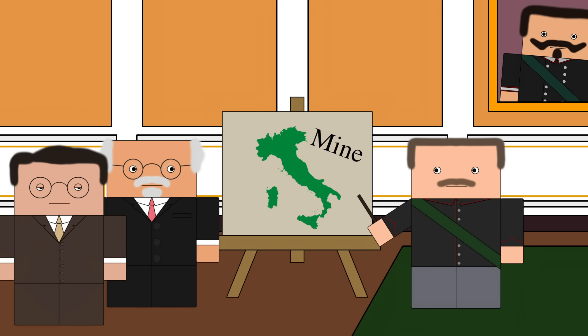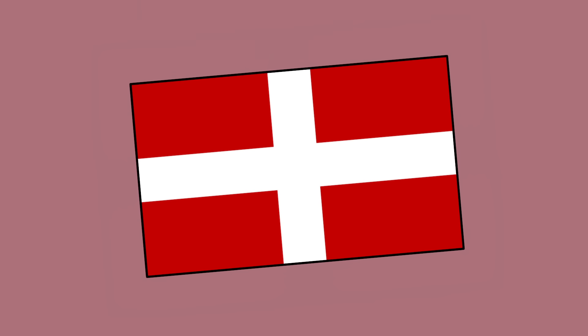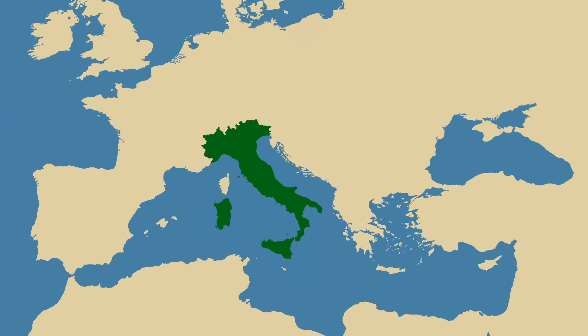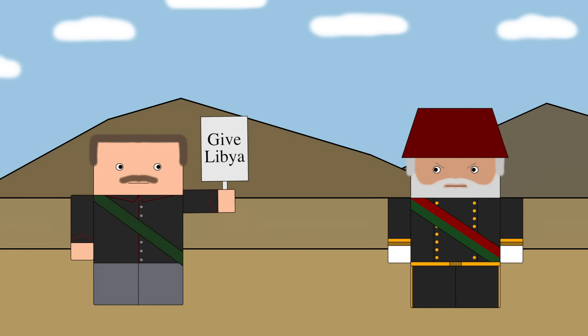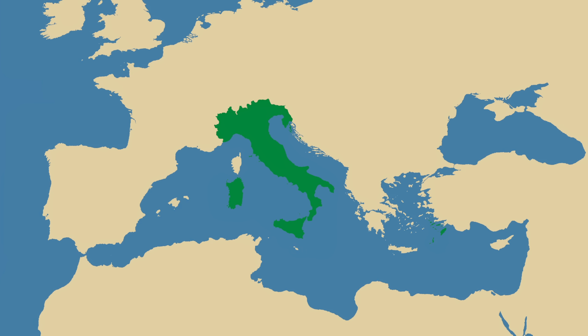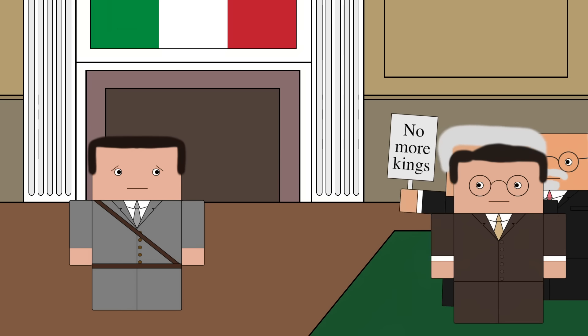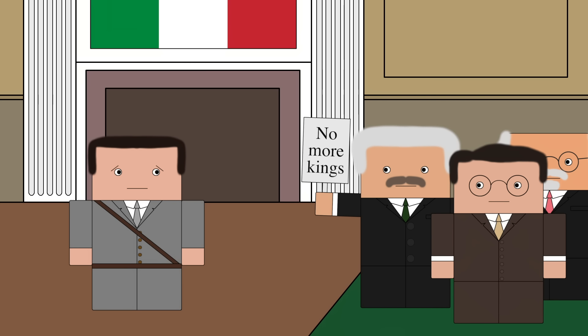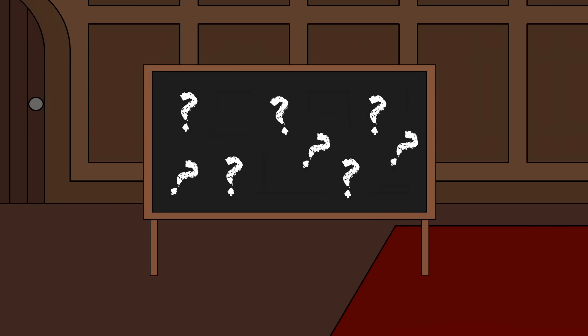Nowadays, Italy is a republic, but as many of you will know, it used to be a monarchy ruled over by the House of Savoy, whose role in the unification of Italy, its imperial expansion, and its victory in the First World War gave it a place at the heart of Italian identity. But despite its cultural significance, the monarchy was abolished — which raises the question: why was the Italian monarchy scrapped?